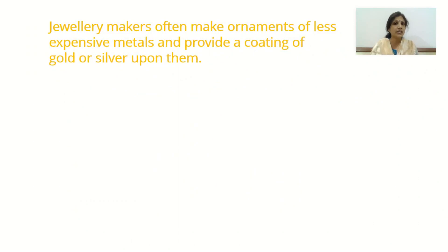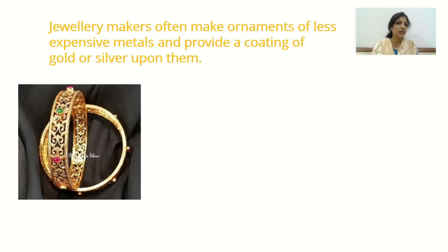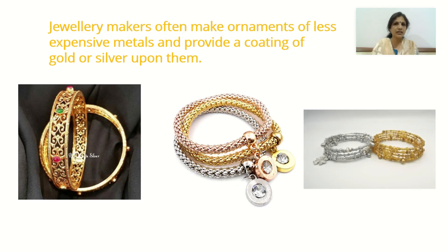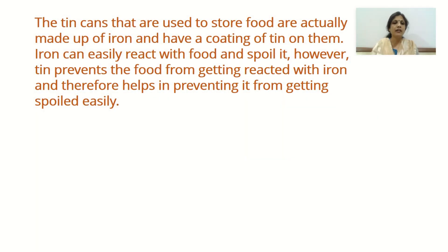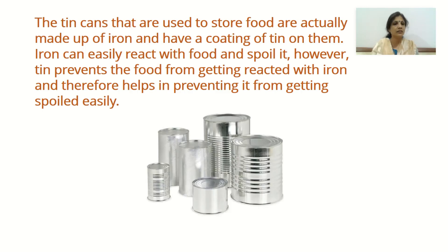Jewelry makers often make ornaments of less expensive metals and provide a coating of gold or silver on them — these are gold-plated or silver-plated ornaments. They look like real gold but are just a coating on brass or silver, making artificial jewelry. Tin cans used to store food are actually made of iron with a coating of tin. Iron can react with food and spoil it, but the tin coating prevents food from reacting with the iron, helping preserve it.